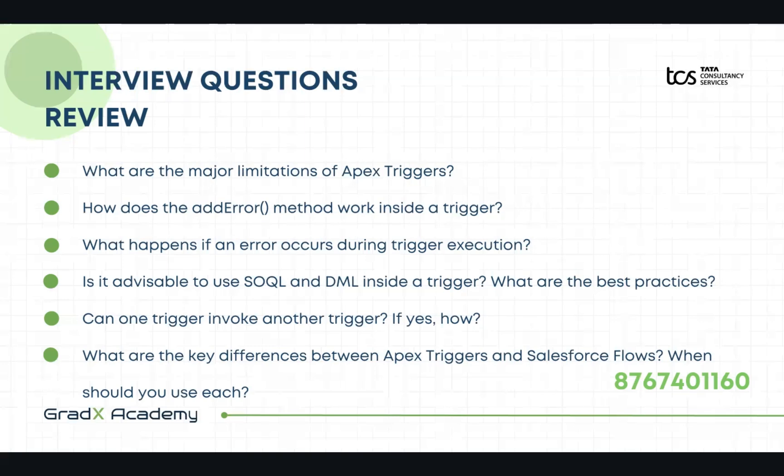How does the addError method work in a trigger? The addError method generates a custom error message on a specific field or record, preventing the DML operation from completing and surfacing the error to the user.